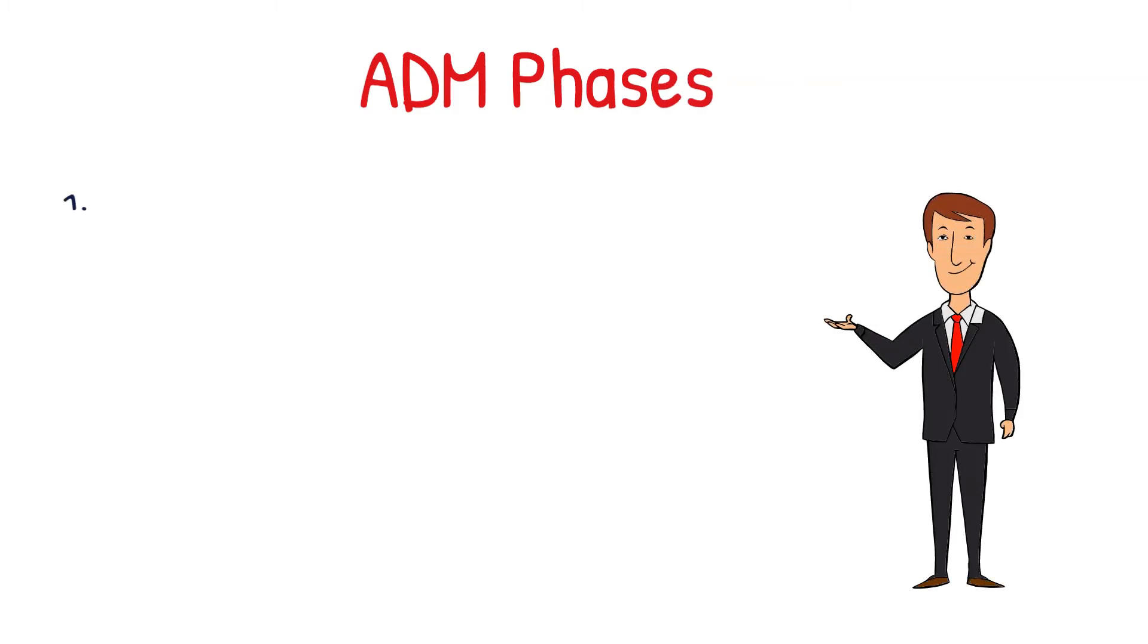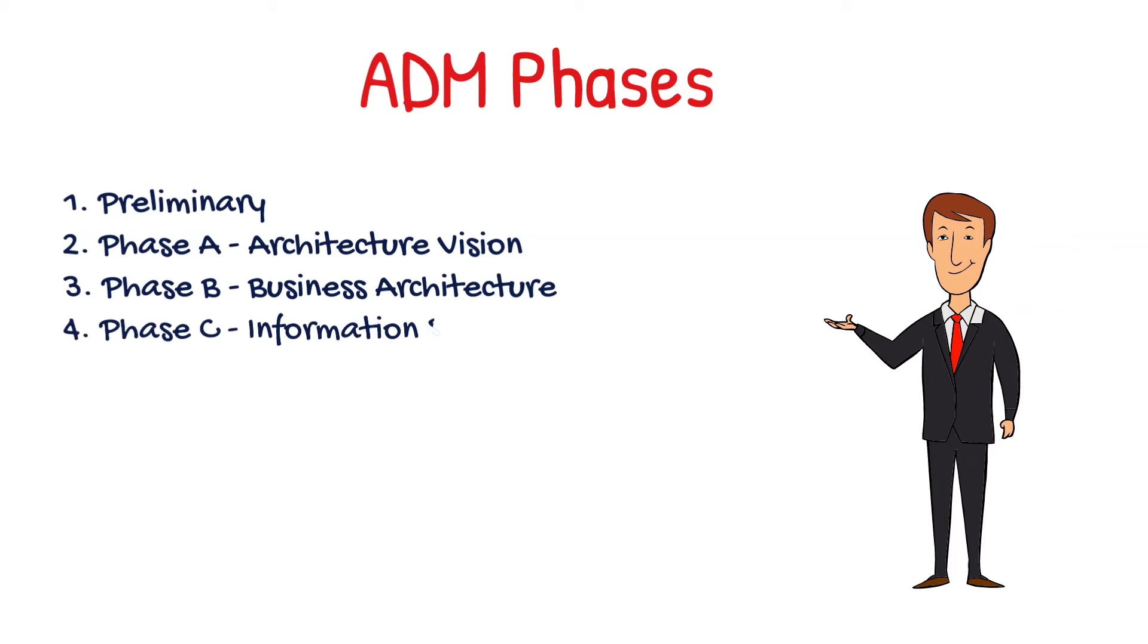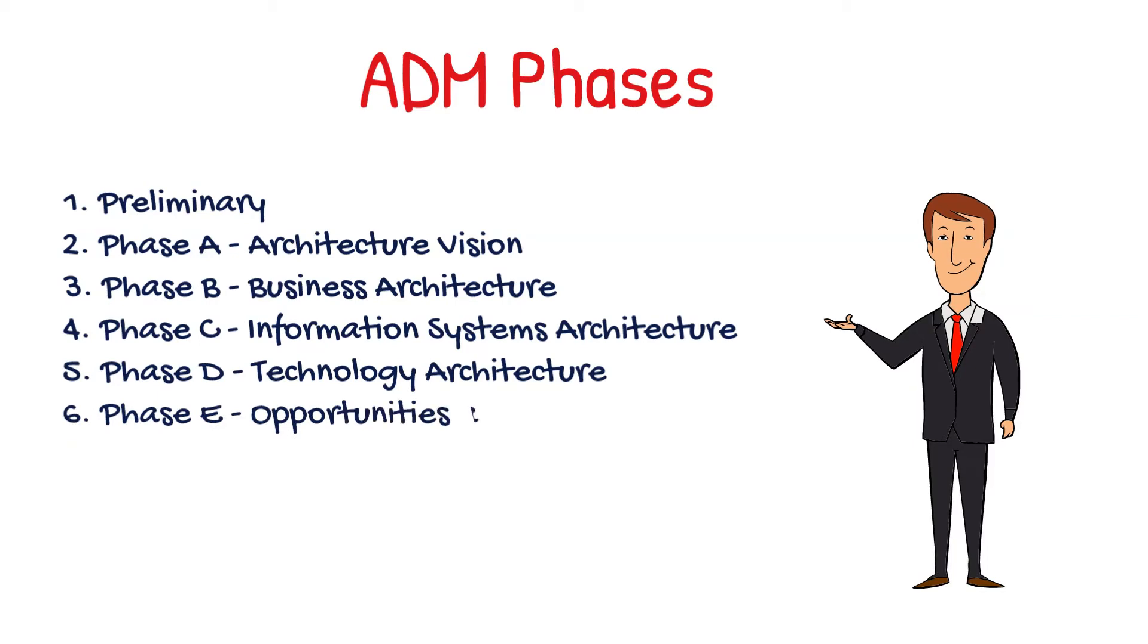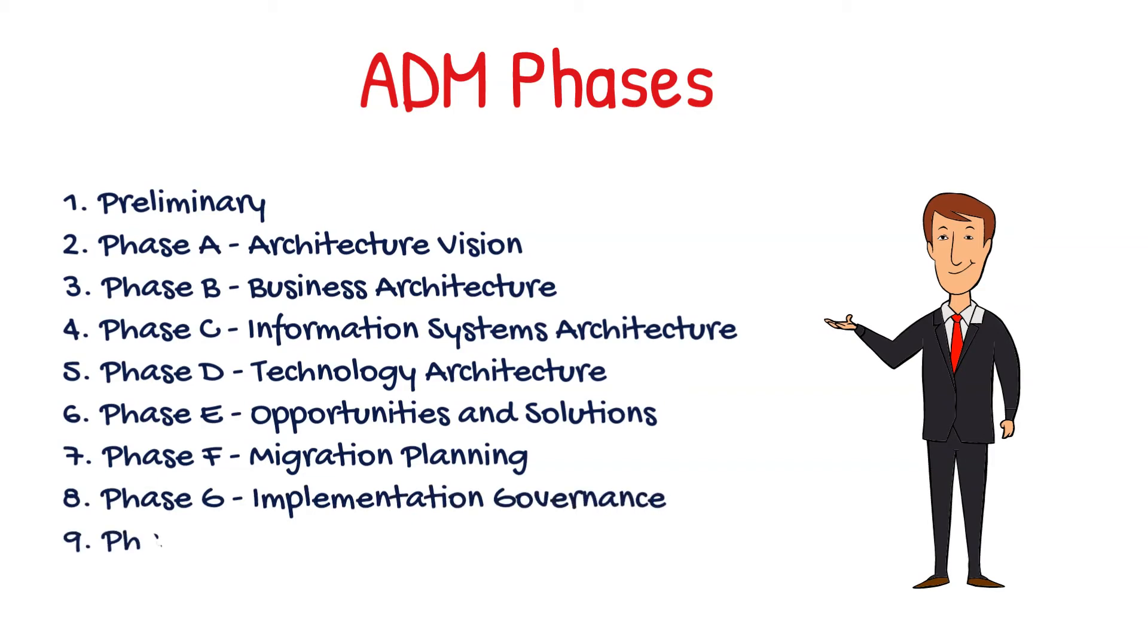Full listing of the ADM phases are Preliminary phase, Architecture Vision phase, Business Architecture phase, Information Systems Architecture phase, Technology Architecture phase, Opportunities and Solutions, Migration Planning, Implementation Governance, Architecture Change Management, and Requirements Management.